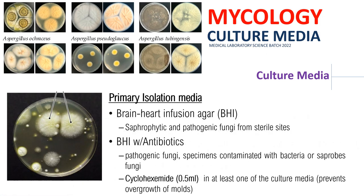Your culture media is divided into two: primary isolation media and differential media. We'll start with your primary isolation media — Brain Heart Infusion Agar, or BHI. This is familiar from bacteriology, where Brain Heart Infusion Agar is used to isolate fastidious organisms. Fastidious means 'maaarte' — organisms that are very particular about their growth requirements. So if you have a fastidious organism, you can use Brain Heart Infusion Agar for primary isolation.